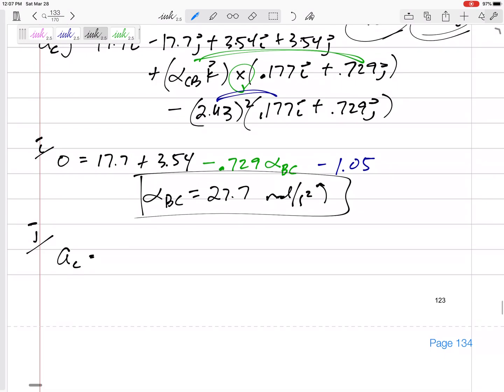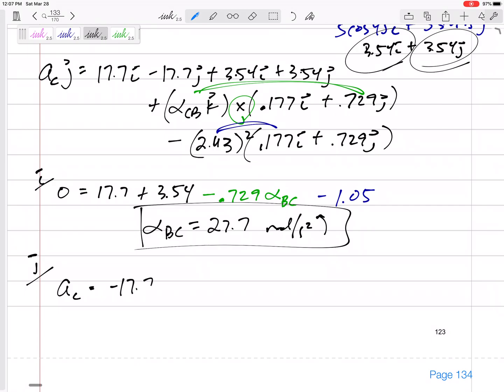Now, my J equation, a_C, and then what's in front of the J on the right-hand side of my equation? Negative 17.7, positive 3.54. Which one of these is going to end up in the J? This one right here, 0.177 alpha. And positive or negative, K cross I is positive J. Now, which one of these? The one that's already in the J direction. Negative 2.43 squared times 0.729. I've got that number. Negative 4.30. And then plug in 27.7 right there.